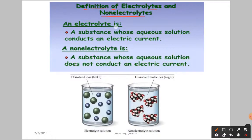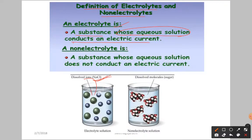How can you define electrolytes? A substance whose aqueous solution conducts an electric current. Aqueous solution means any salt, any compound, if dissolved in water, that is called an aqueous solution. That aqueous solution that conducts electric current is called an electrolyte.